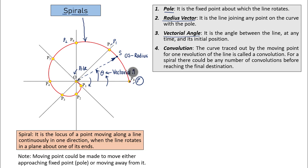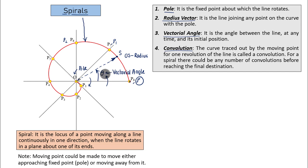A convolution is also very simple. The curve traced out by the moving point for one full revolution of the line is a convolution. For a spiral there could be n number of revolutions; two revolutions give two convolutions. In this particular demonstration I have only gone for one revolution, which is why we have got one convolution.